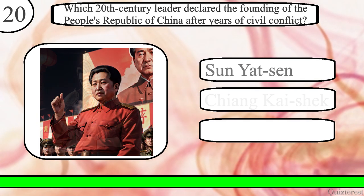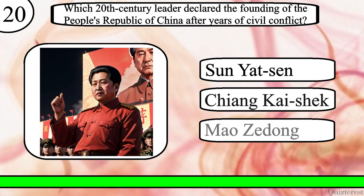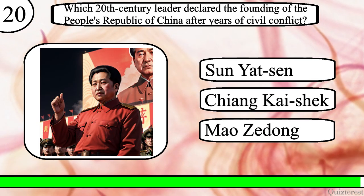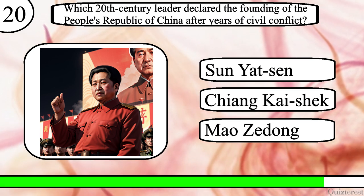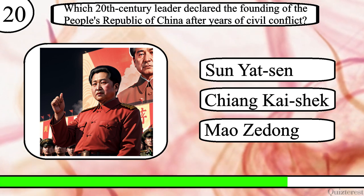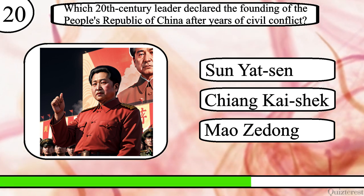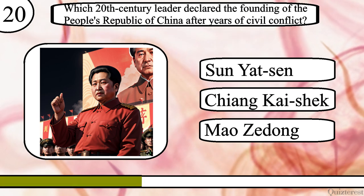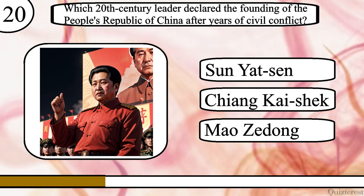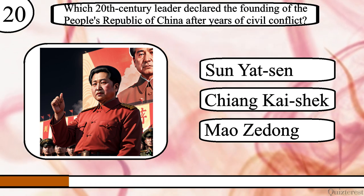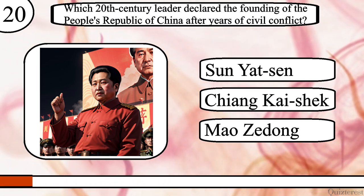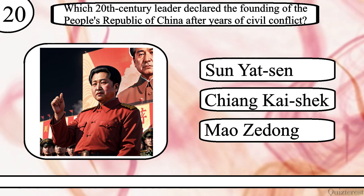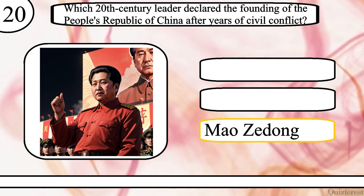Question 20. Which 20th-century leader declared the founding of the People's Republic of China after years of civil conflict? Sun Yat-sen, Chiang Kai-shek, or Mao Zedong? The correct answer is Mao Zedong.